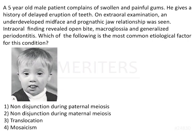A 5-year-old male patient complains of swollen, painful gums. He gives a history of delayed eruption of teeth. On extra-oral examination, an underdeveloped mid-face and a prognathic jaw relationship was seen. This means a class 3 relationship.